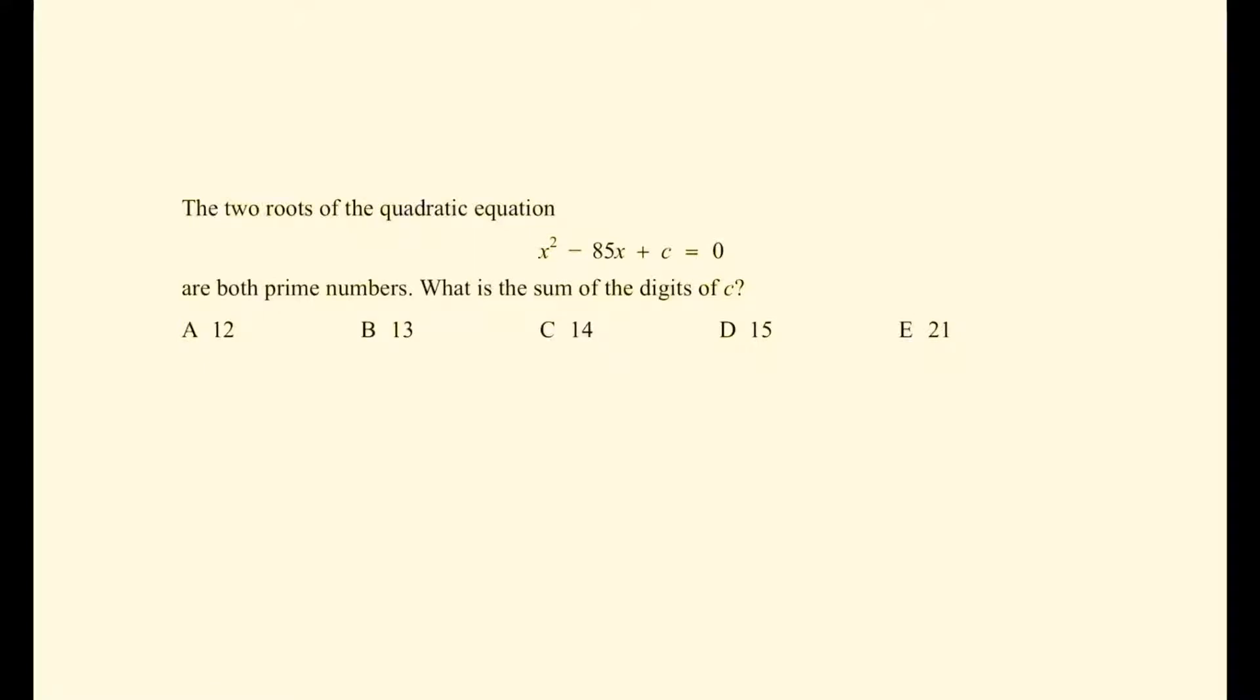The two roots of the quadratic equation x squared minus 85x plus c equals 0 are both prime numbers. What is the sum of the digits of c?